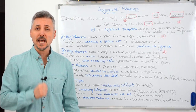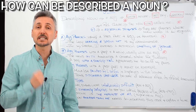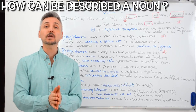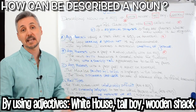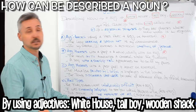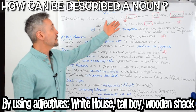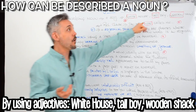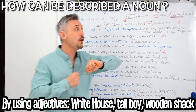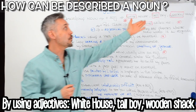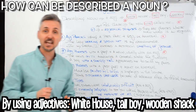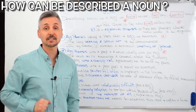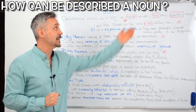Adjectival phrases. How can we describe a noun? A noun can be described using an adjective, obviously — like in White House, or Tall Boy, or Wooden Shack. If you want to watch a lesson on adjectives, you may click here.